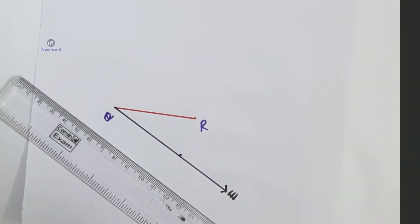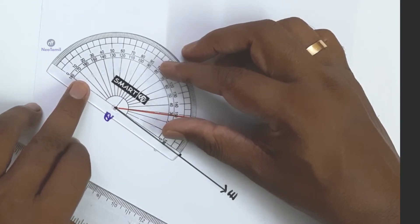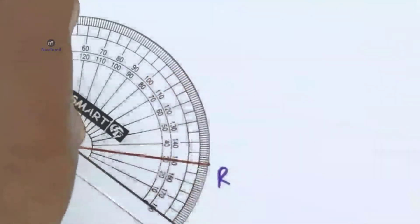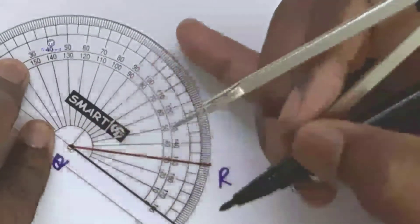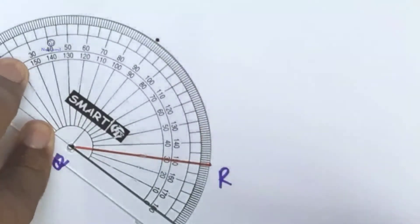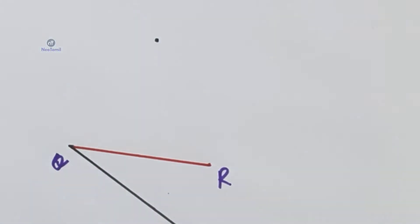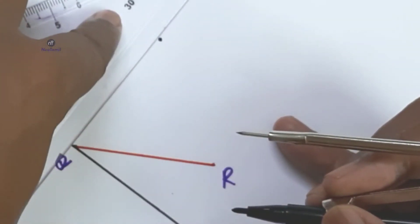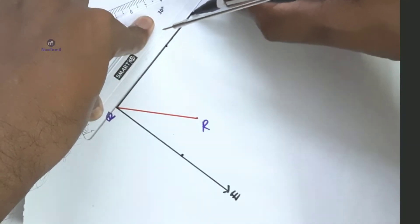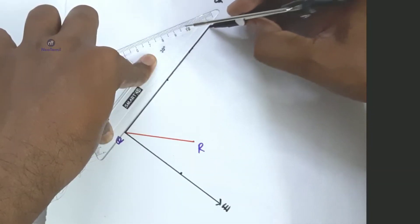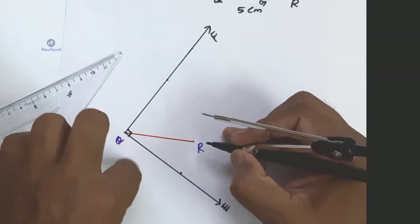Draw QF such that QF is perpendicular to QE. Draw the line at Q so that angle EQF equals 90 degrees. This angle is 90 degrees.